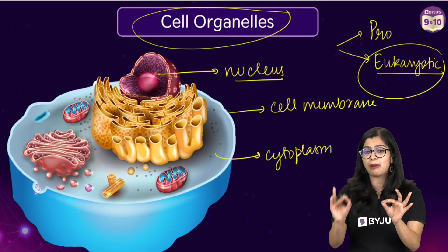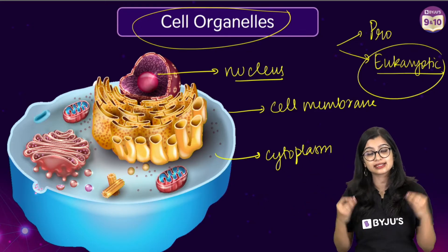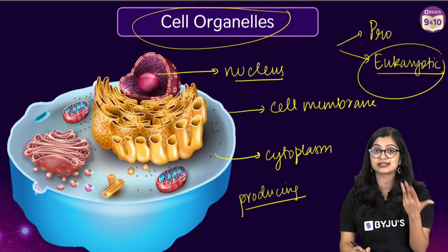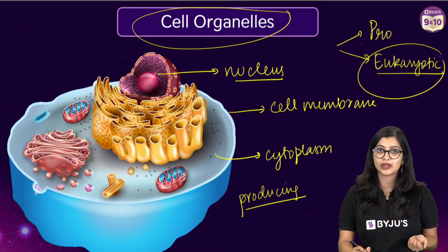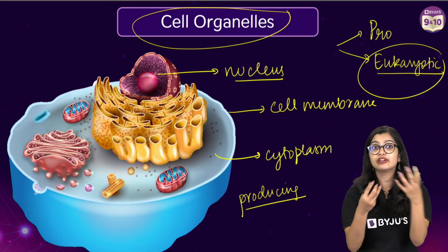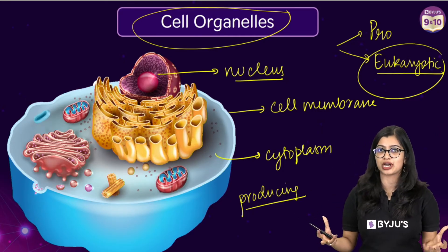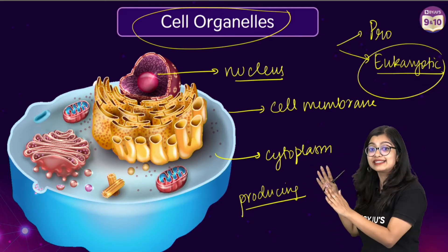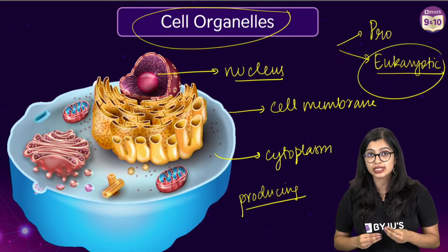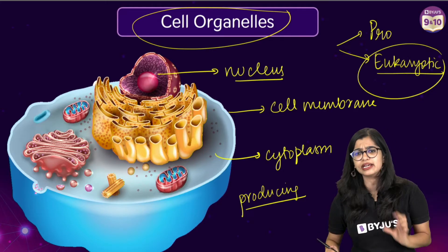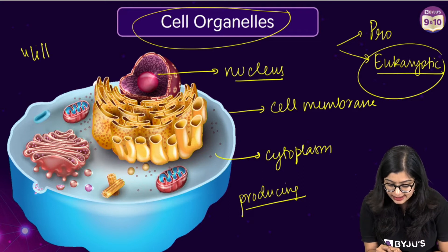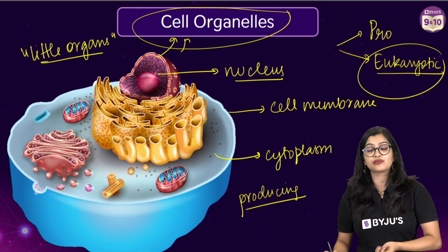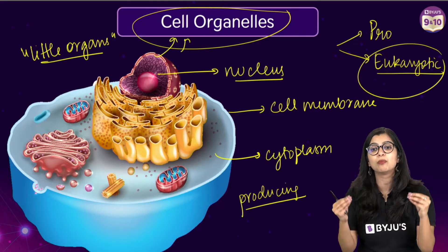So what do we mean by membrane-bound cell organelles? The cell has the ability to carry out various activities — right from producing energy, it has the ability to synthesize certain components and get rid of waste material. If we look at us human beings, we have different body parts which can do a similar kind of function, whether it is to produce energy or get rid of unwanted substances. The cell is able to carry this out because it has certain small, tiny organ-like structures which are present, and we call them cell organelles. These organelles perform important functions within the cell and they are bound by membranes.